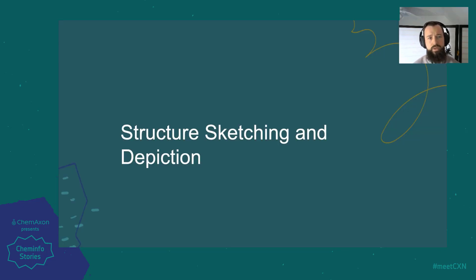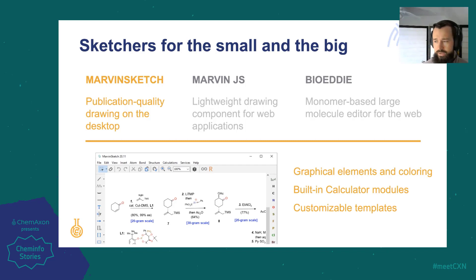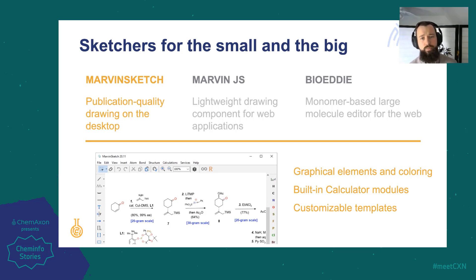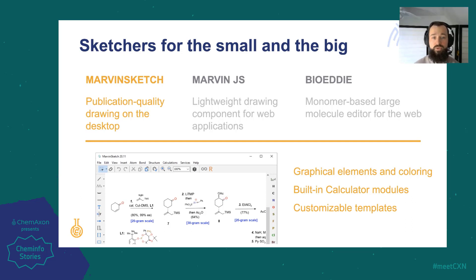We'll start by looking at ChemAxon software used for structure sketching and depiction. MarvinSketch is ChemAxon's desktop drawing application and it's proved to be a reliable partner for chemists in drawing molecules, single-step reactions, queries, marquee structures, and even complex synthesis schemes. Applying styles, colors, and graphical elements you can make clear illustrations loaded with chemistry. The built-in calculations are a real added value, giving access to all the popular physicochemical descriptors from ChemAxon.